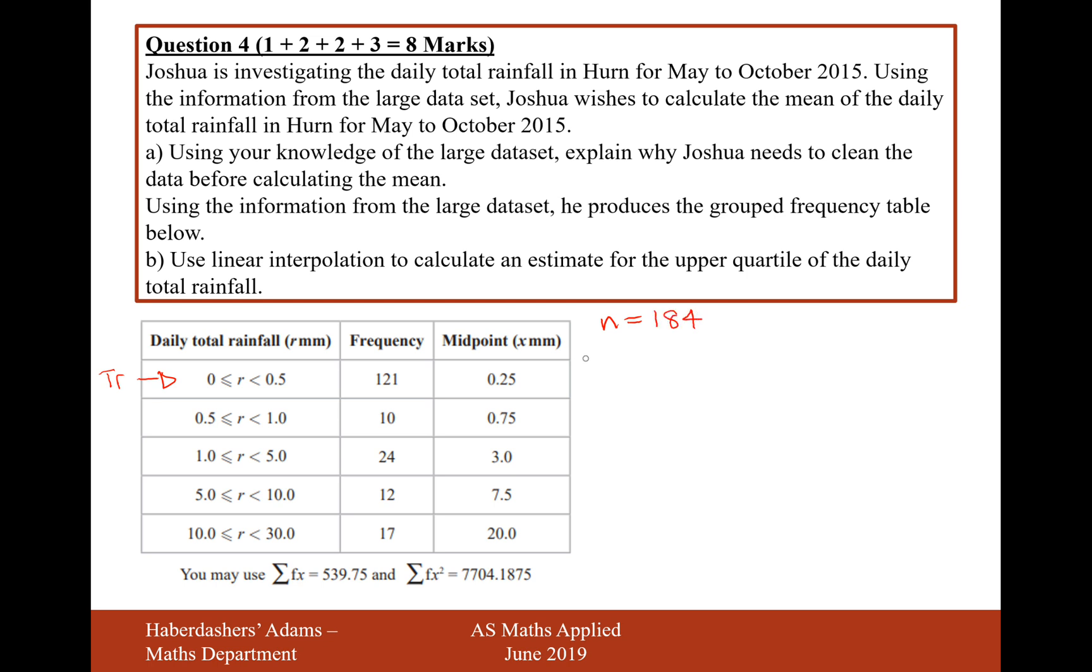So for the upper quartile, we need to find the three-quarter way mark on 184. And three-quarters of 184 is 138. So we need to find the 138th piece of data.